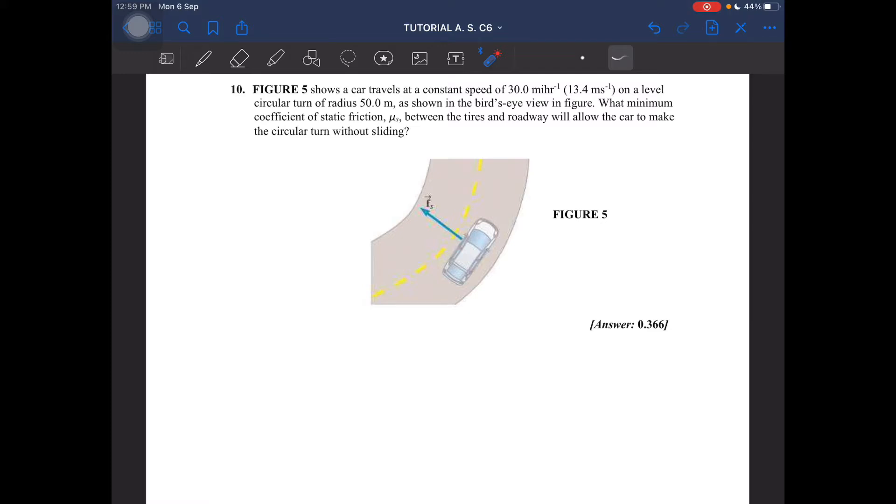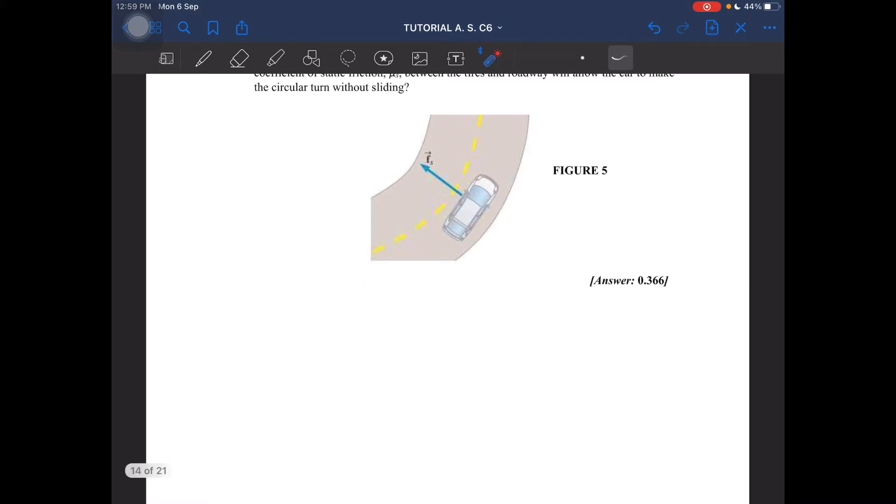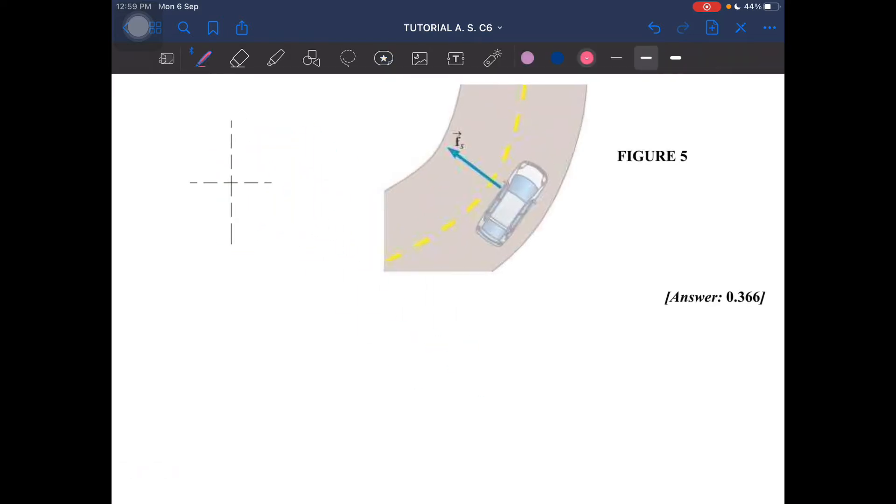Okay, so this one, let's draw the free body diagram. This is the static friction, this is the weight, this is the normal force. And then this is the direction of the centripetal acceleration. So this is mg, ac, fs, n.